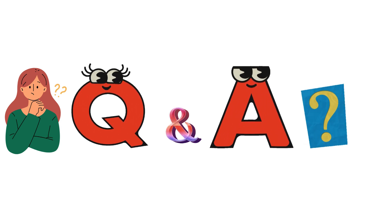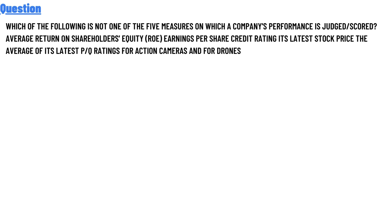Our today's question is: which of the following is not one of the five measures on which a company performs? The answer choices include: just scores, average returns on shareholders' equity, ROE, earnings per share, credit rating.